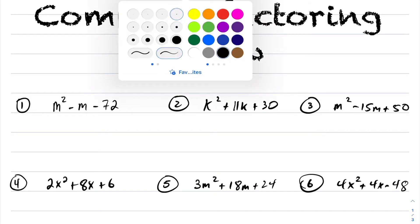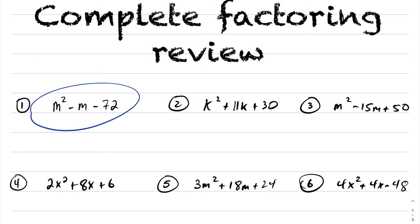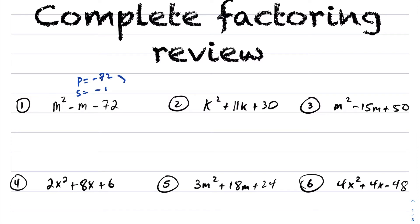So let's take a look at the first question. If you look at this, you're going to say, okay, I've got a simple trinomial. Notice the leading coefficient is 1. When you have a simple trinomial, it's product sum. My product is negative 72 and my sum is 1. I need two numbers that multiply to be negative 72 and add to be 1 — those are negative 9 and 8. So this factors into m minus 9 times m plus 8.